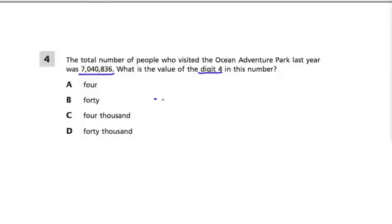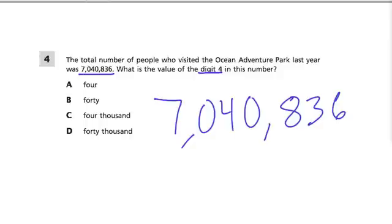So let's just rewrite the number: 7,040,836. And all they're asking, of course, is about this number right here, the 4. What does it represent? Does it represent 4 tens or 4 hundreds? Well, let's just go through the place value.